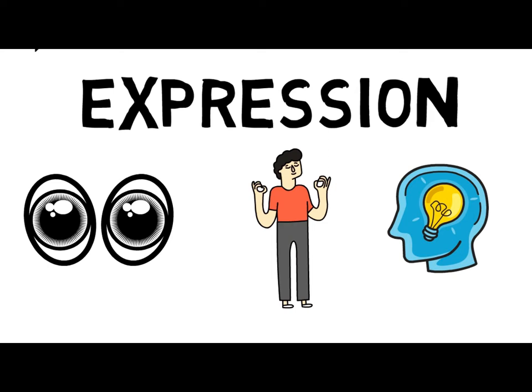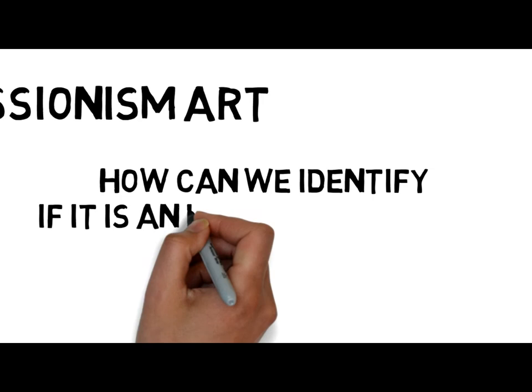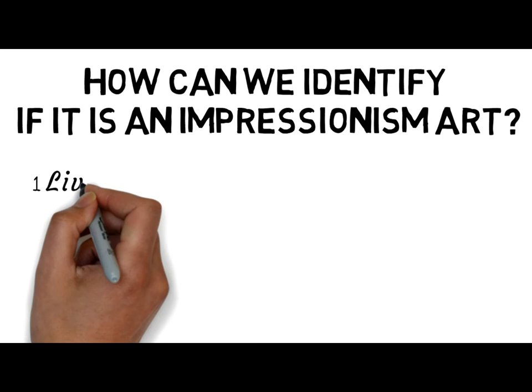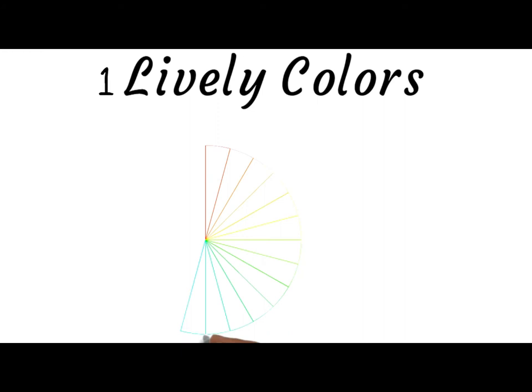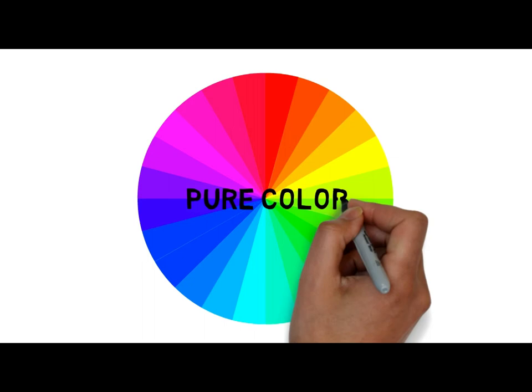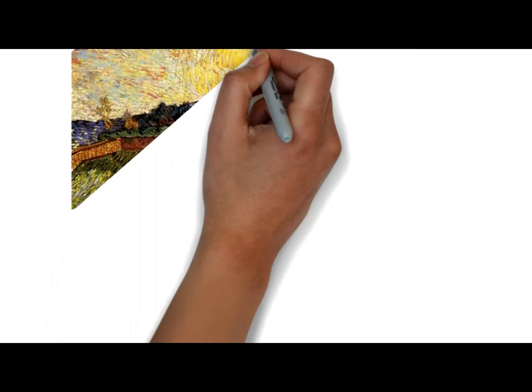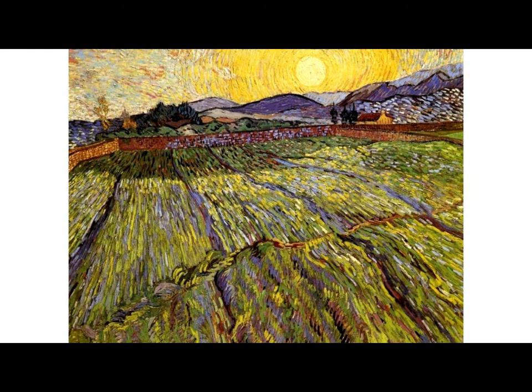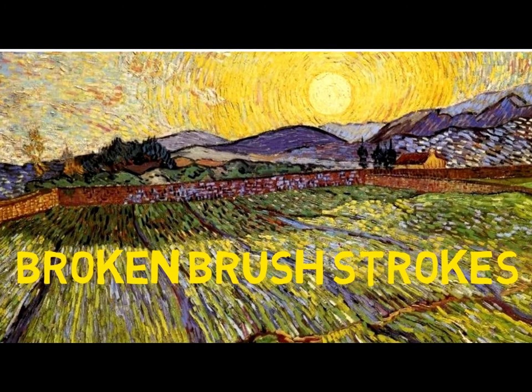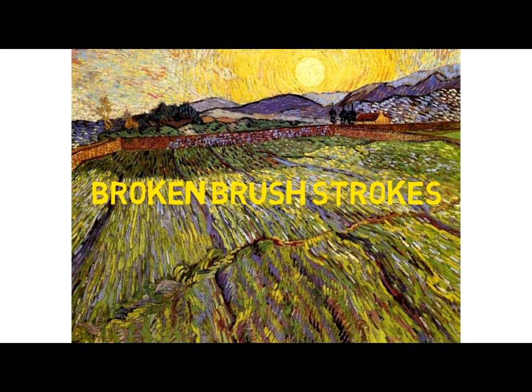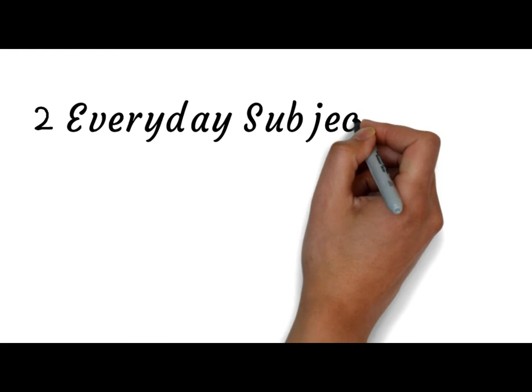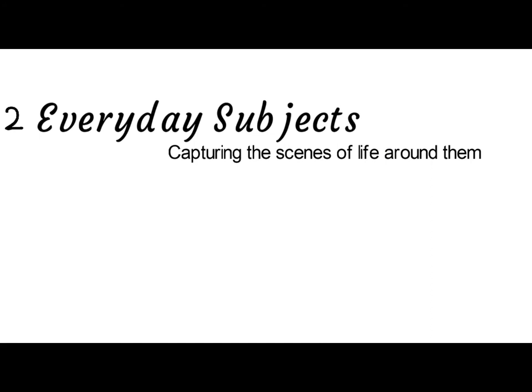How can we identify Impressionism Art? Number one: notice the lively colors of the artwork. In Impressionism, artists use lively colors — they avoid black and use the colors of the natural world. Aside from lively colors, they also use different and broken brushstrokes. As you will notice in this artwork by Van Gogh, the brushstrokes have different directions, which is why the artwork sometimes appears undetailed. The second way to identify Impressionism Art is that they use everyday subjects — capturing the scenery of life around them: mountains, rivers, trees, and things around us.